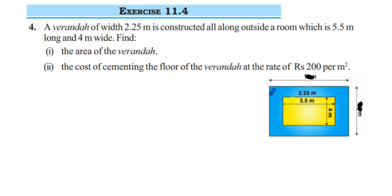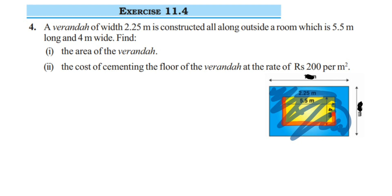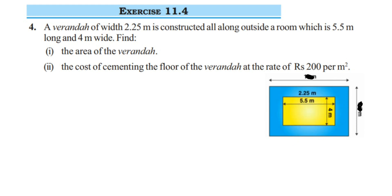To find the veranda area, we will first find the area of the room along with the veranda — the entire thing. Then from that area, we subtract the area of the room, and we'll get the area of the veranda. But first we need the measurements of the entire outer area — the length and breadth including both the room and the veranda.